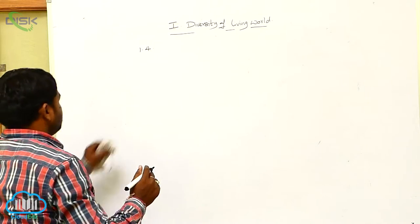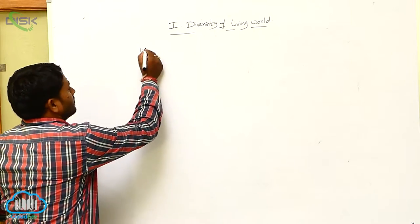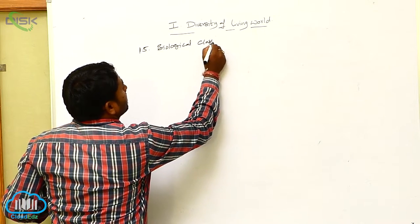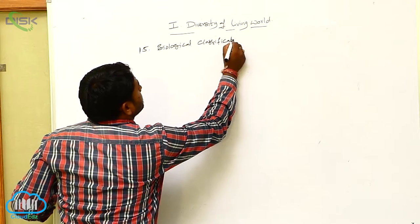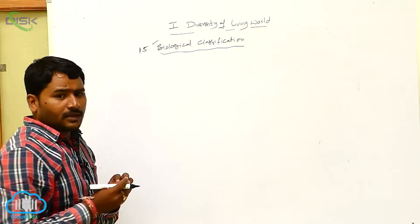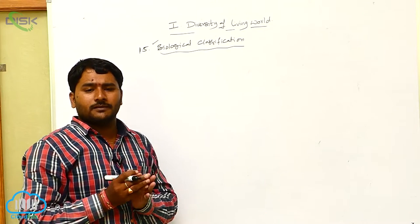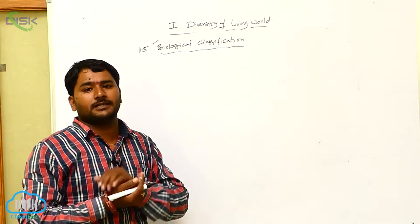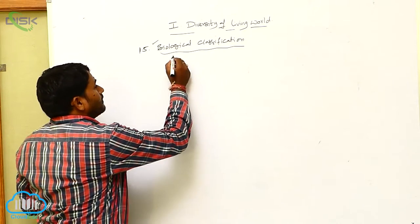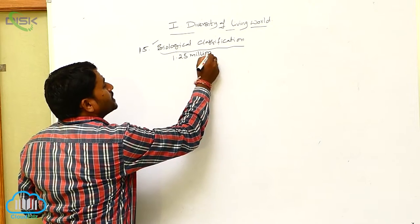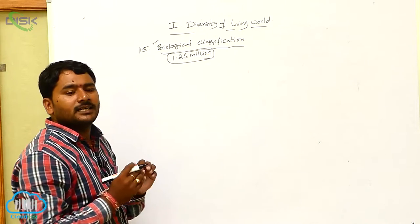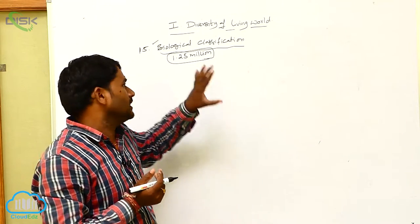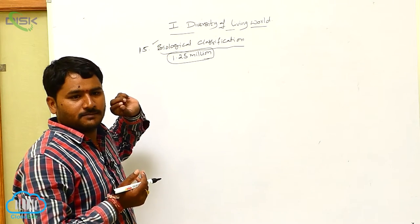In Biological Classification, 1.25 million species have been identified and described. By the process of classification only, we can study about organisms and the different types of organisms.